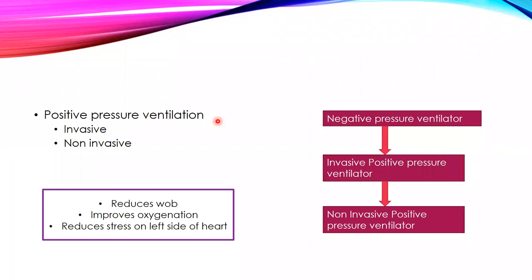In positive pressure ventilation you can apply positive pressure in two ways — invasive or non-invasive. The term invasive is used when you have intubated the patient and are applying pressure through the endotracheal tube, called invasive mechanical ventilation. When you apply positive pressure through a mask, it is called non-invasive ventilation — no endotracheal tube is required.